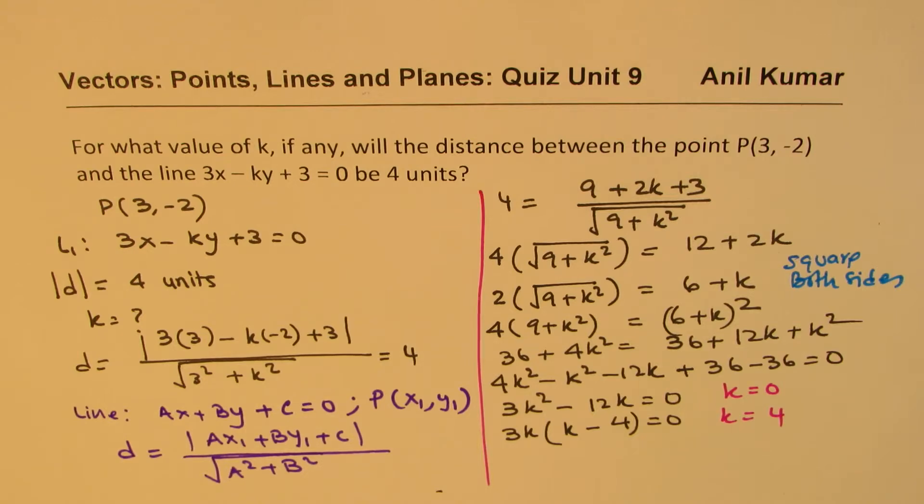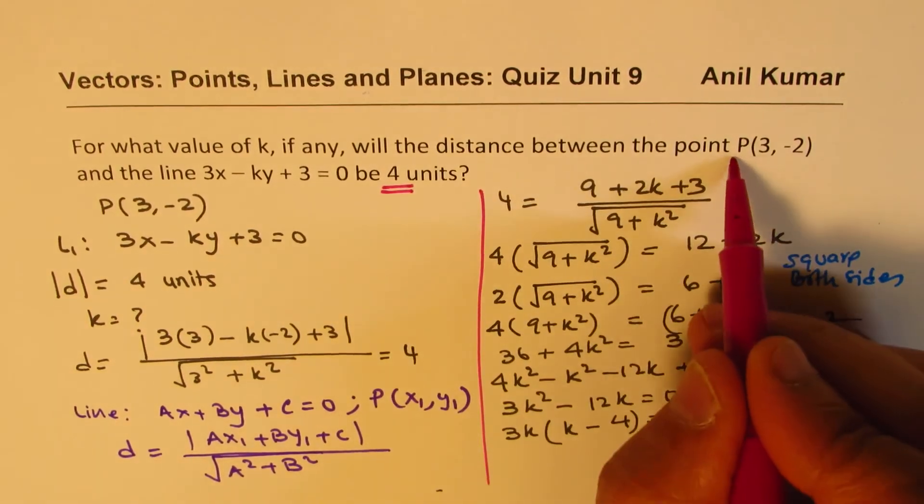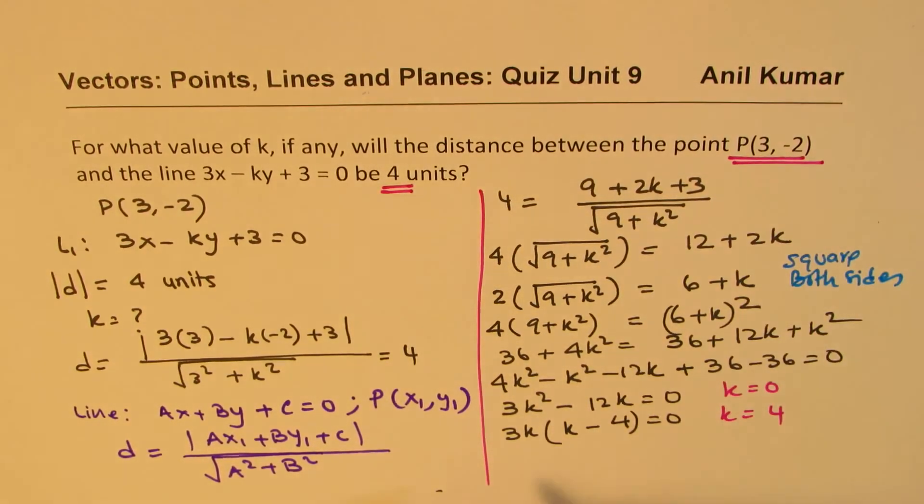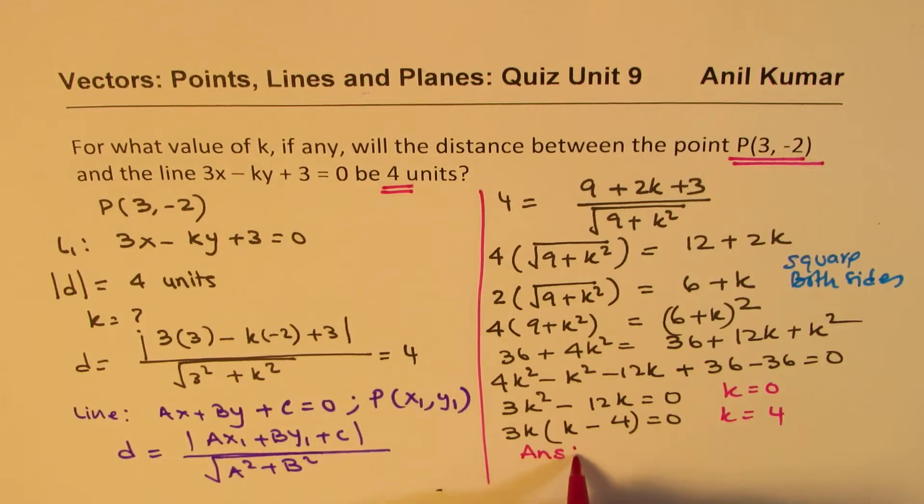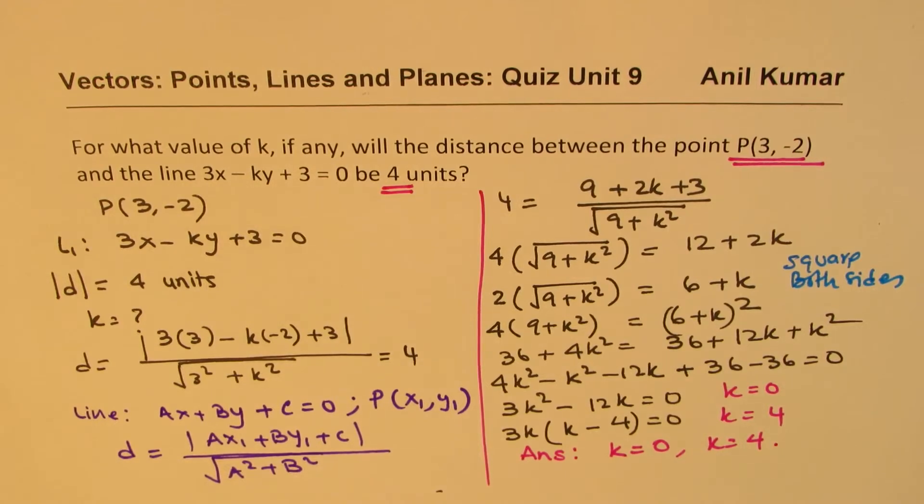So those are the two possible values of k which will give us a distance of 4 units from the given point. So we have two answers here, and the answers are k = 0 or k = 4. Both are valid.